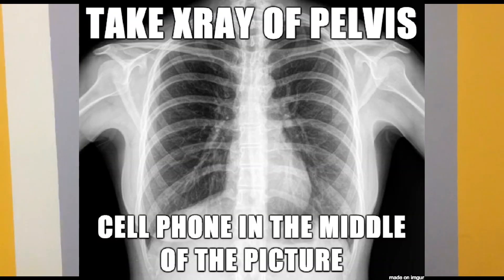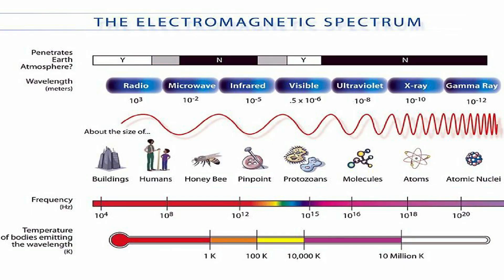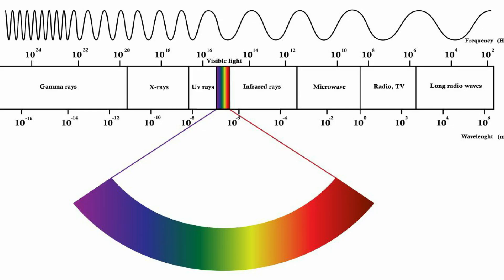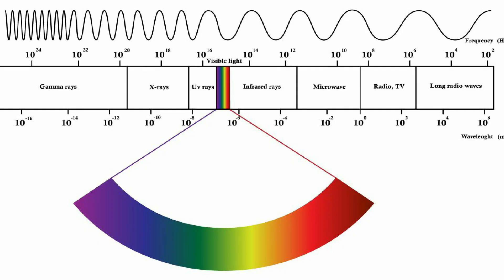X-Ray is a form of high energy electromagnetic radiation. Most X-rays have a wavelength ranging from 0.01 to 10 nanometers. X-Ray wavelengths are shorter than those of UV rays and typically longer than those of gamma rays.